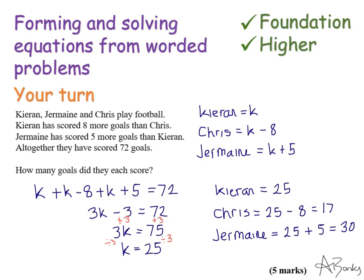So I said that Kieran was K. That would mean Chris was K take away eight. And Jermaine was K add five. So all together we add all these up. It gives me this equation here.